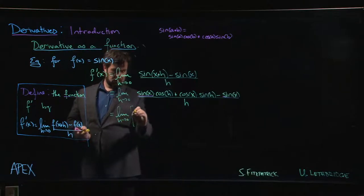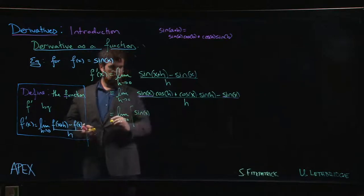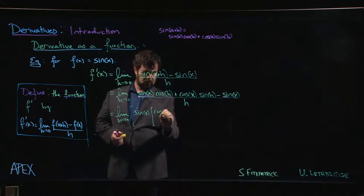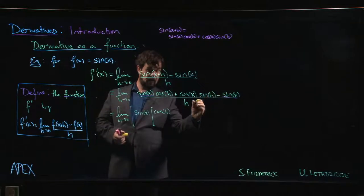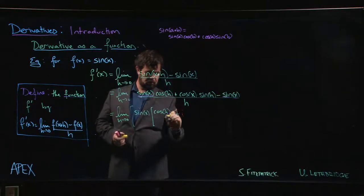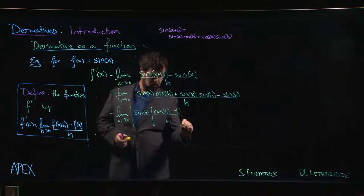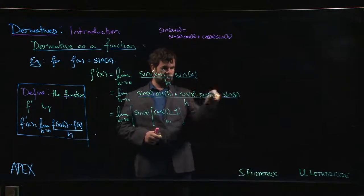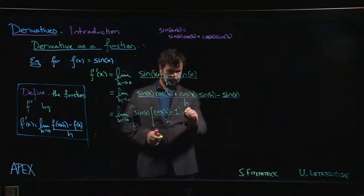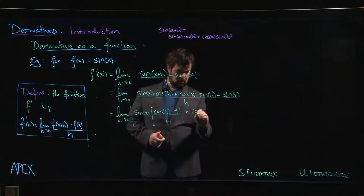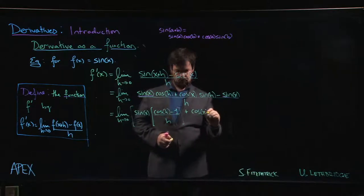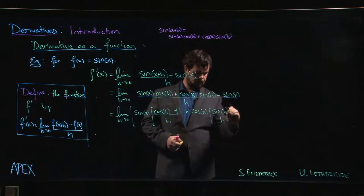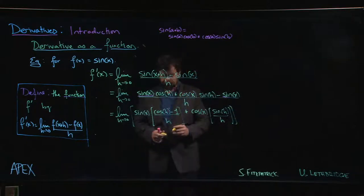As h goes to 0, we have sine of x times cos h minus 1, over h. I'm allowed to divide term by term, right? I can put this over h, this over h, this over h. So we can put the h there. Then we have cos x times sine h over h.